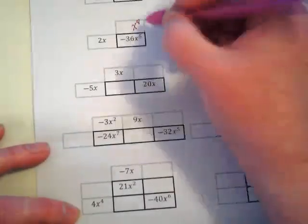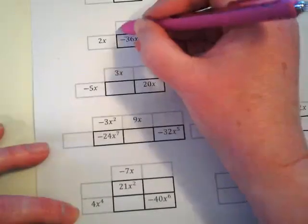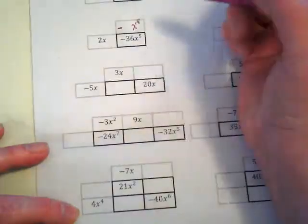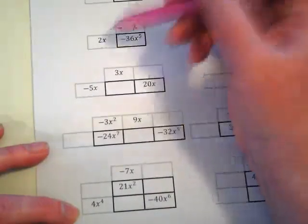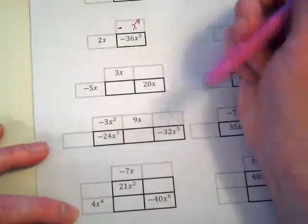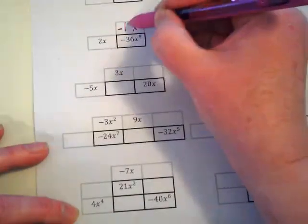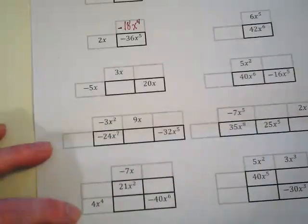Sorry, there's my dog. So what are we going to have here? We have to have a negative number, that when it's multiplied by 2, we get negative 36. So this would be negative 18x to the 4th.